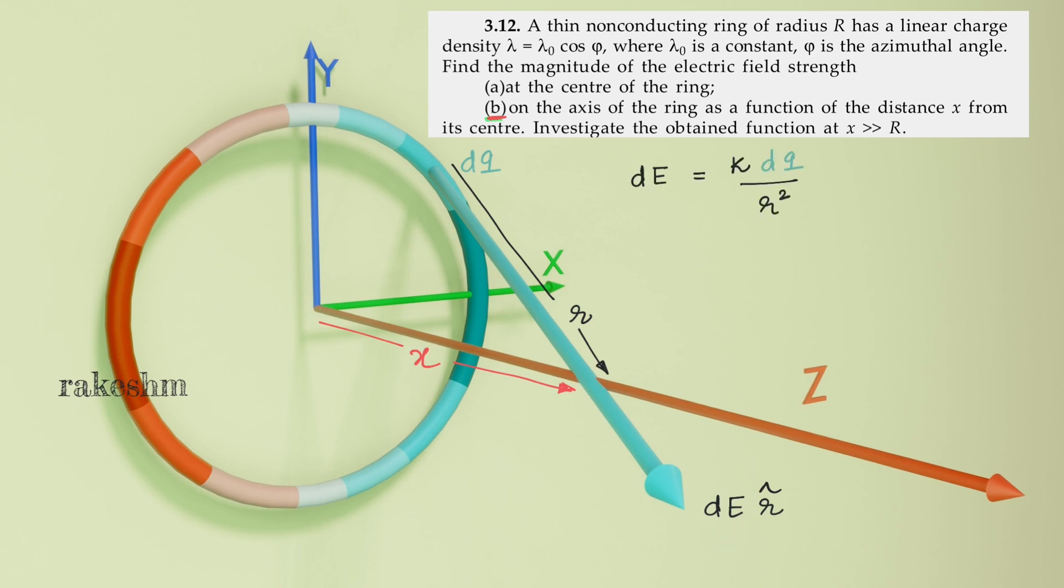The value of dE is k dq by r square. So k dq by r square. We can write r-cap as yellow vector plus pink vector divided by r.